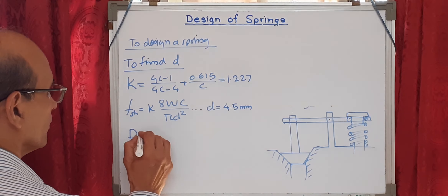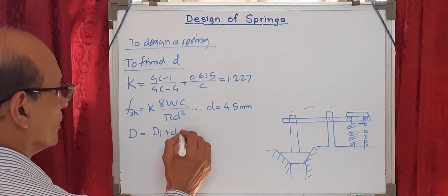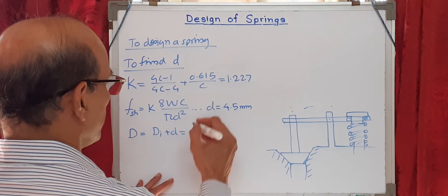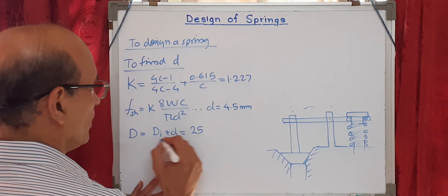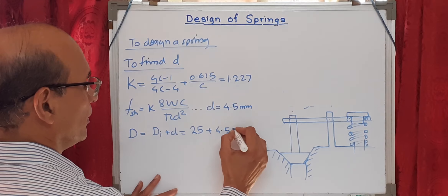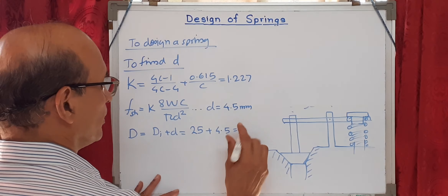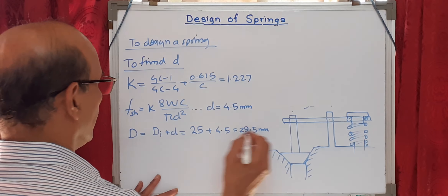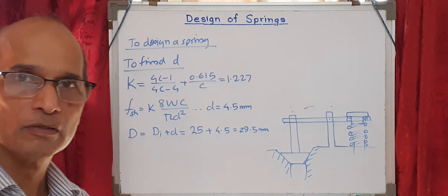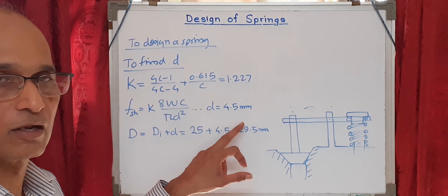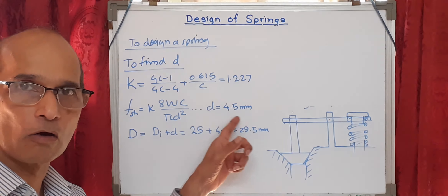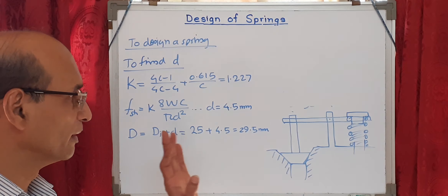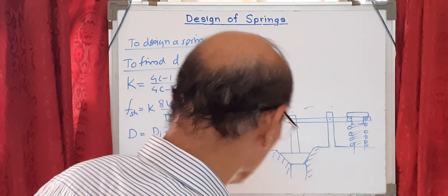Now the mean coil diameter D equals D_i plus d, which is 25 plus 4.5, giving D approximately 29.5 mm. In this case we are not going to round off the wire size, because rounding off would change all the properties. Whatever sizes are calculated, they are kept as-is.